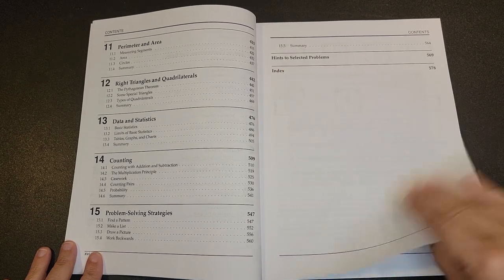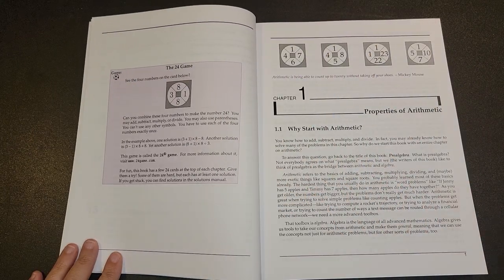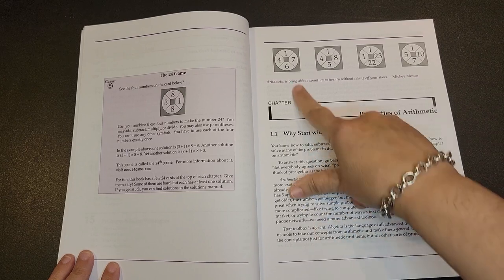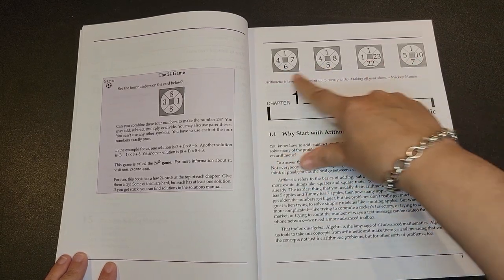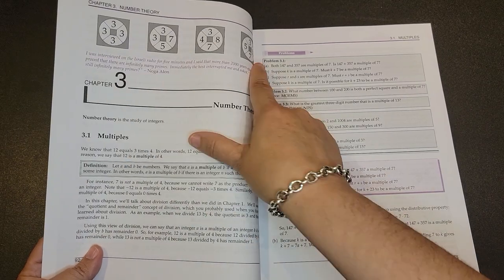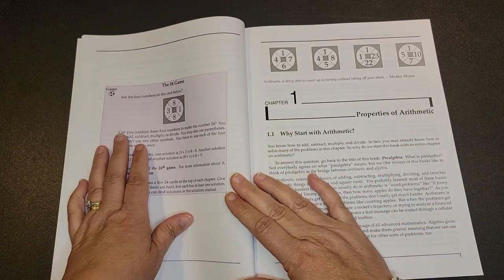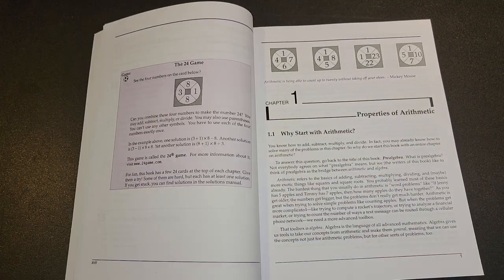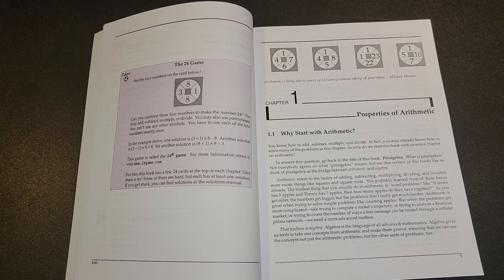They do also have a hint section just to selective problems. One of the things that I noticed immediately when I started flipping through this book are these that are up here. You will notice them at the beginning of the different chapters. What they are is the 24 game, so you will have to do strategic thinking to be able to solve these.